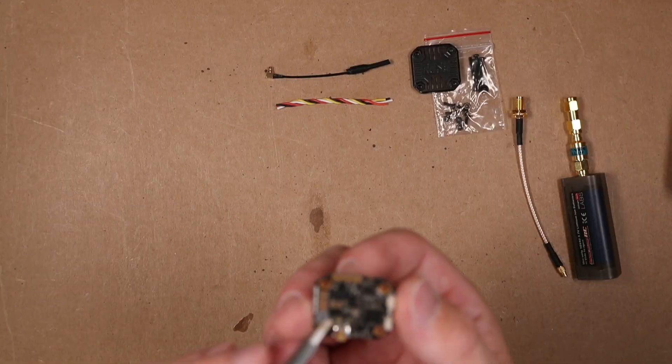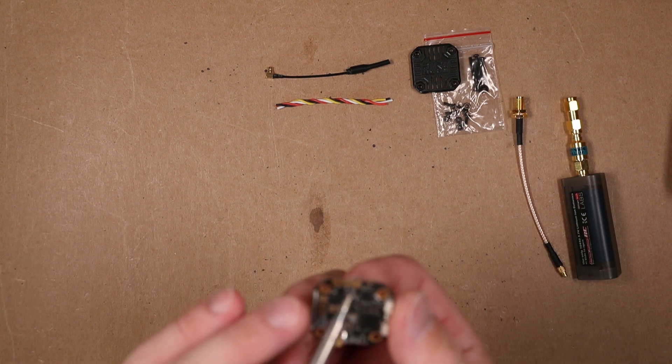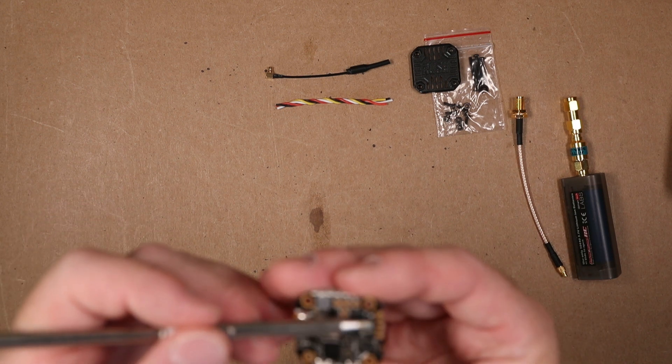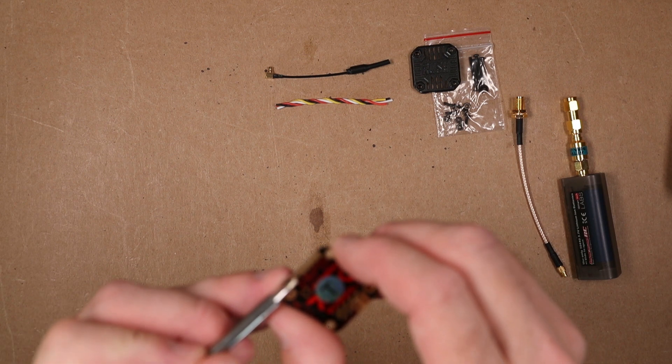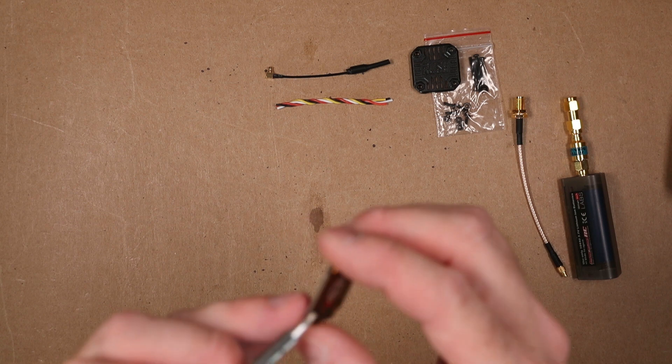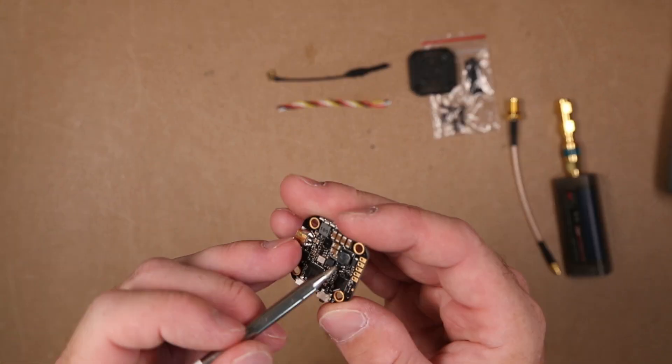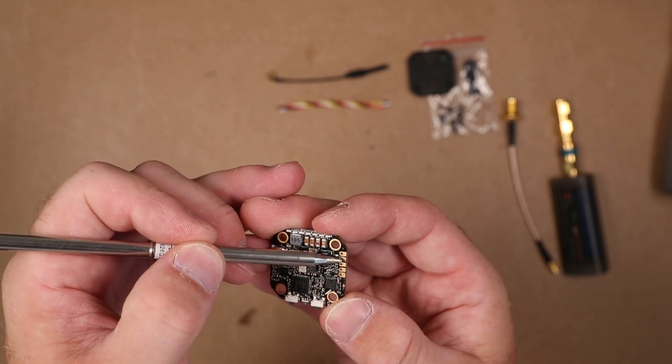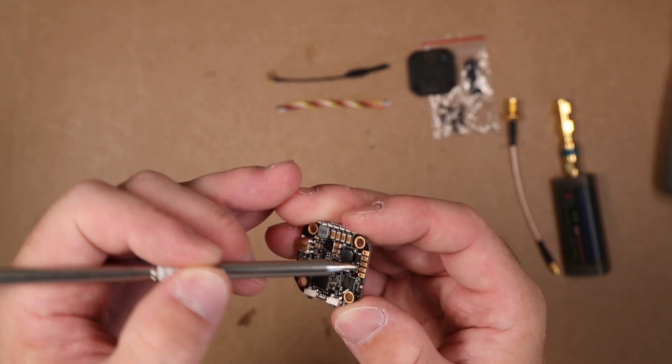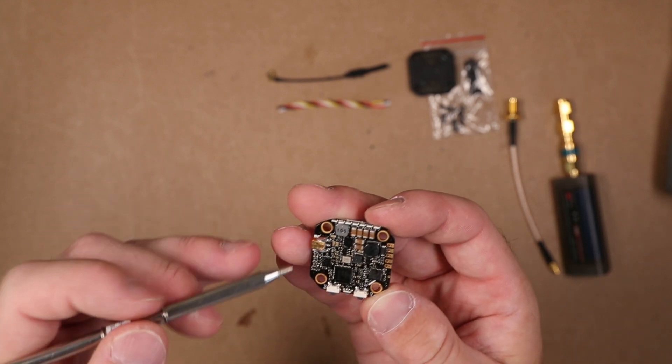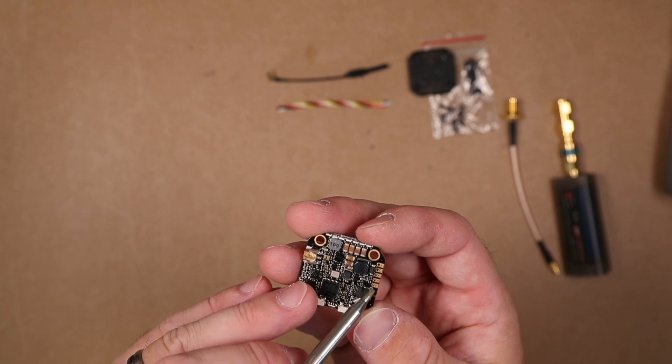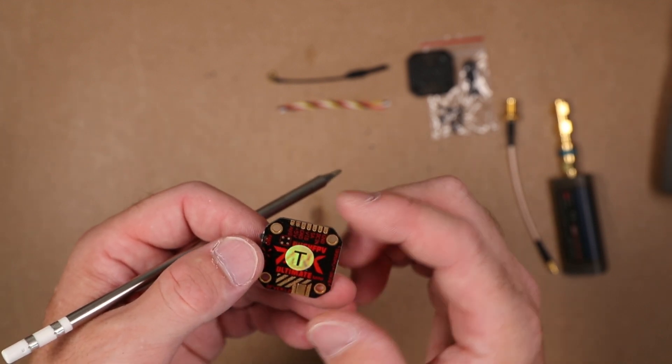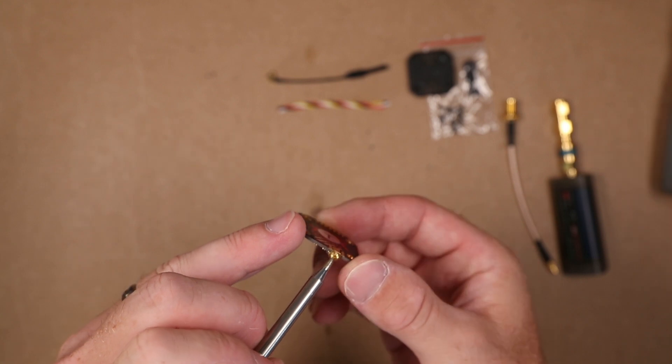If we flip this over, we have gone from seven pads down to five pads. On the other side we lose the 5 volt and the audio, which I believe is your microphone. These five pads from the top are ground, TC in, VTX, and ground. I would have broken out one more pad for the positive. Our antenna connector is MMCX.